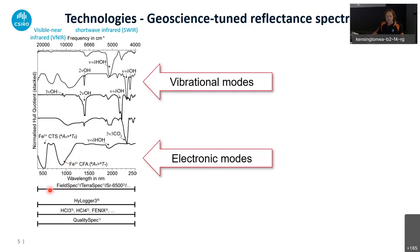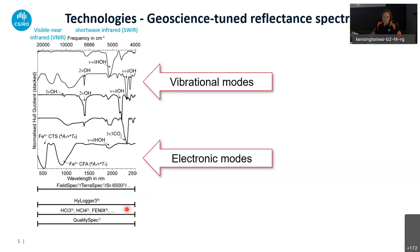There are a number of commercially available spectrometers we can use. There are field spectrometers like those from Malvern Panalytical — also called ASDs — the FieldSpec and TerraSpec — and instruments from Spectral Evolution. Working for CSIRO, I also want to highlight the HiLogger instrument, which was developed at CSIRO and commercialized with Corescan a couple of years ago. This scans the same wavelength region. There are also imaging spectrometers with which you can create hyperspectral images, and conveyor belt scanners like the QualitySpec from Malvern Panalytical.